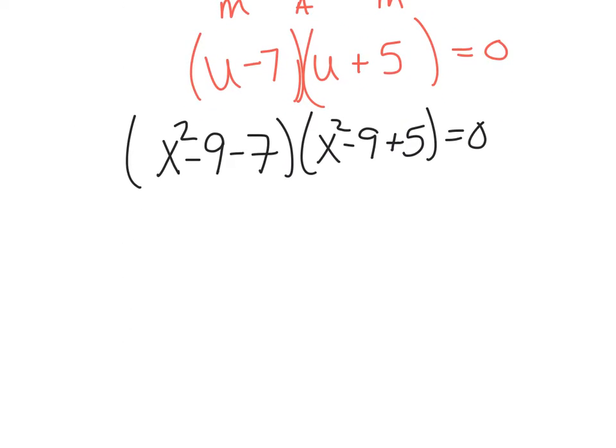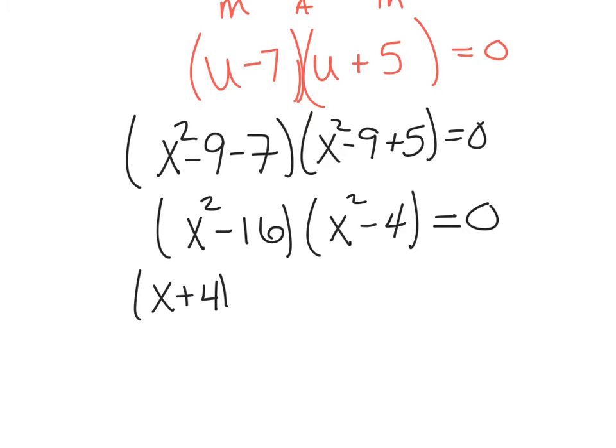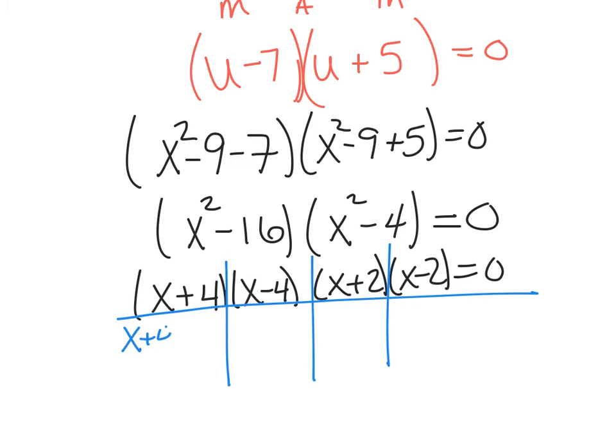This can get cleaned up nicely because I've got like terms sitting here. I actually get x squared minus 16 and x squared minus 4. These are perfect squares, difference of two perfect squares. It has to be a difference in order to get factored. So, this can get factored to x plus 4 and x minus 4 and x plus 2 and x minus 2. Because it said solve, I'm going to set each piece equal to 0. I get x equals negative 4, x equals 4, x equals negative 2, and x equals positive 2.